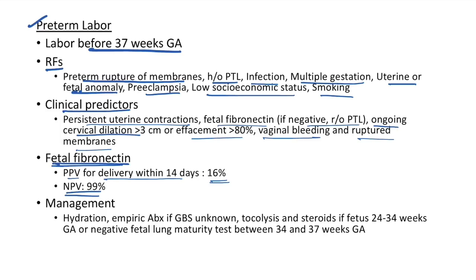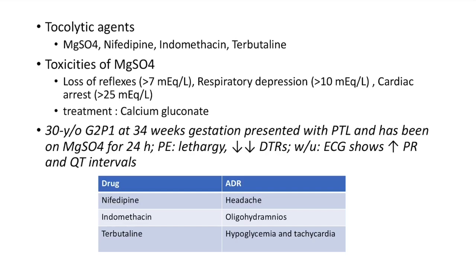Management of preterm labor: hydration, empiric antibiotics if GBS status is unknown, tocolysis, and steroids if the fetus is between 24 to 34 weeks gestational age, or if there is a negative fetal lung maturity test between 34 to 37 weeks gestational age.